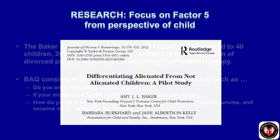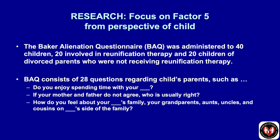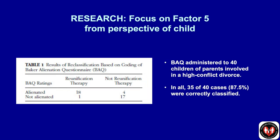Baker administered her questionnaire to 20 kids in one group and 20 kids in another group — 28 questions each. The BAAQ consists of questions such as: 'Do you enjoy spending time with your mom or dad?' 'If your mother or father don't agree, who's usually right?' and 'How do you feel about your parent's family — grandparents, aunts, uncles, cousins?' Of the 40 children, 35 cases — 87.5% — were correctly classified.